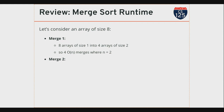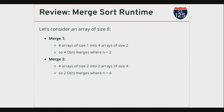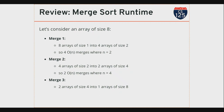Now I have four arrays of size two, all sorted, that I need to merge back together. My second merge takes those four arrays and merges them in pairs into two arrays of size four — again two merges where N is four, equivalent to one step where N is eight. That's another O(N) step. My final step takes those two arrays of size four and merges them into one array of size eight — clearly one merge of O(N) where N is eight. So every level of the algorithm takes O(N).